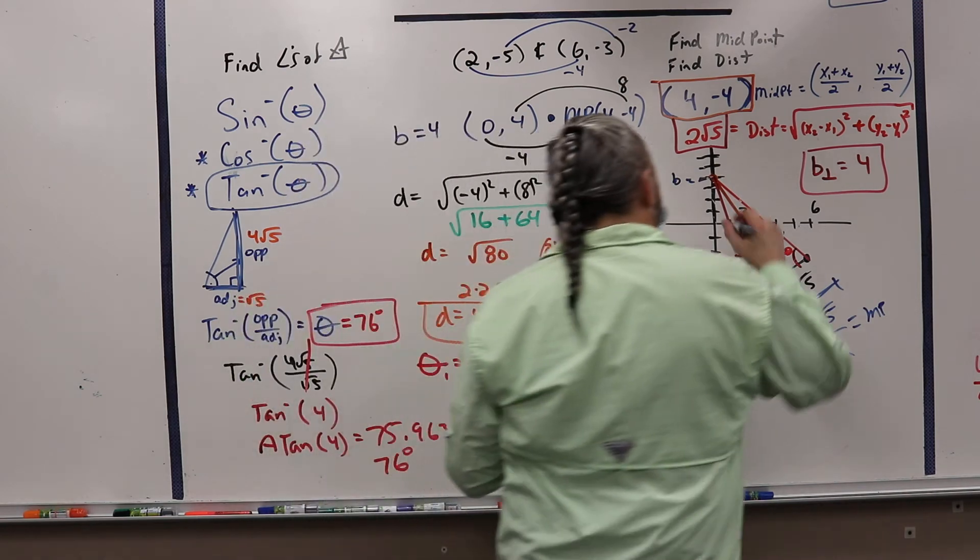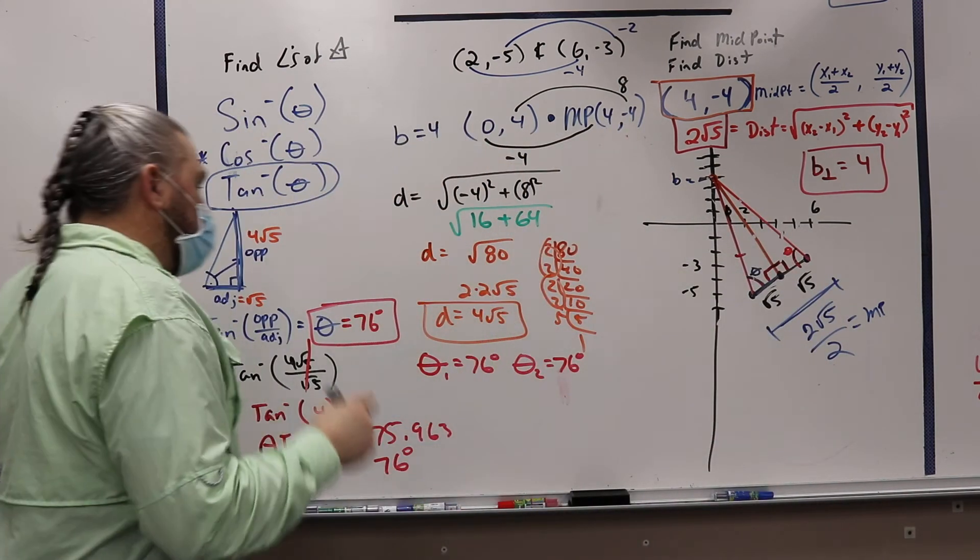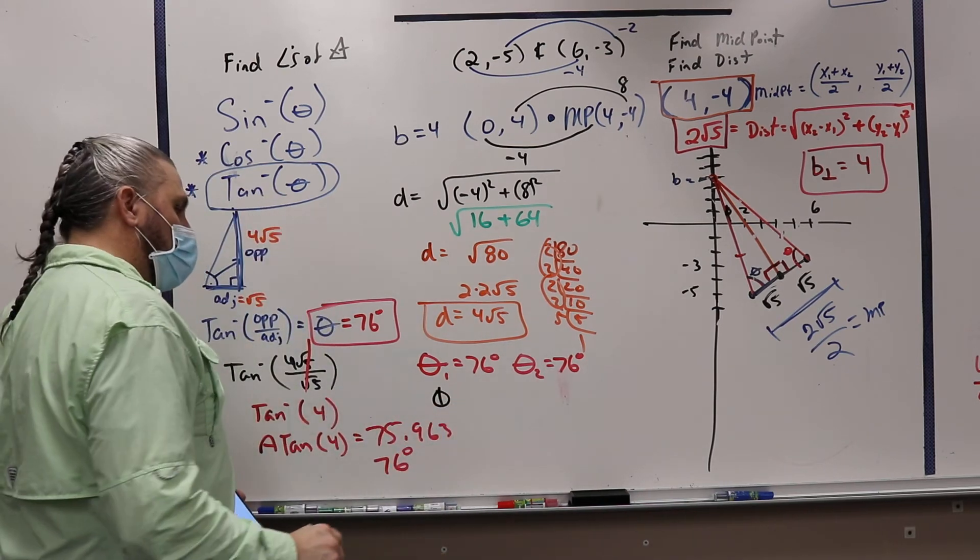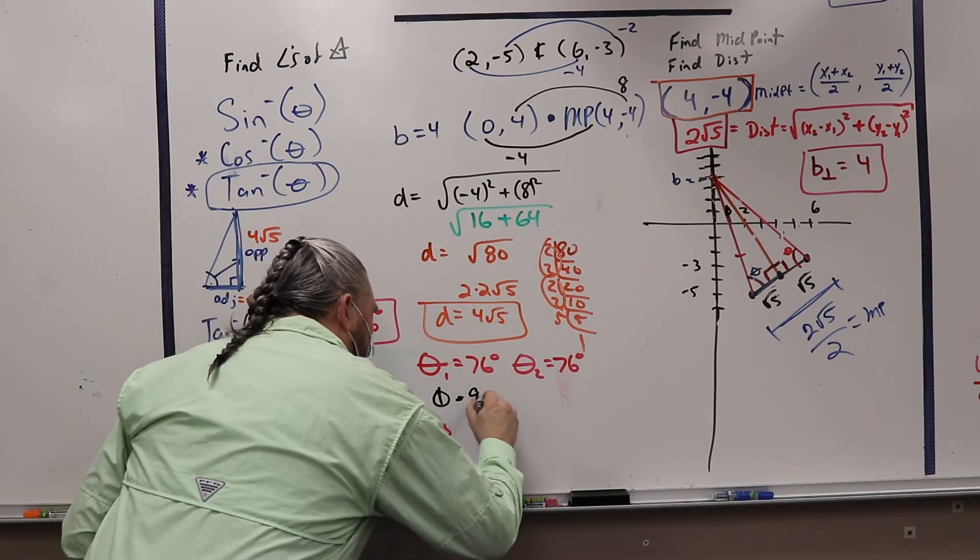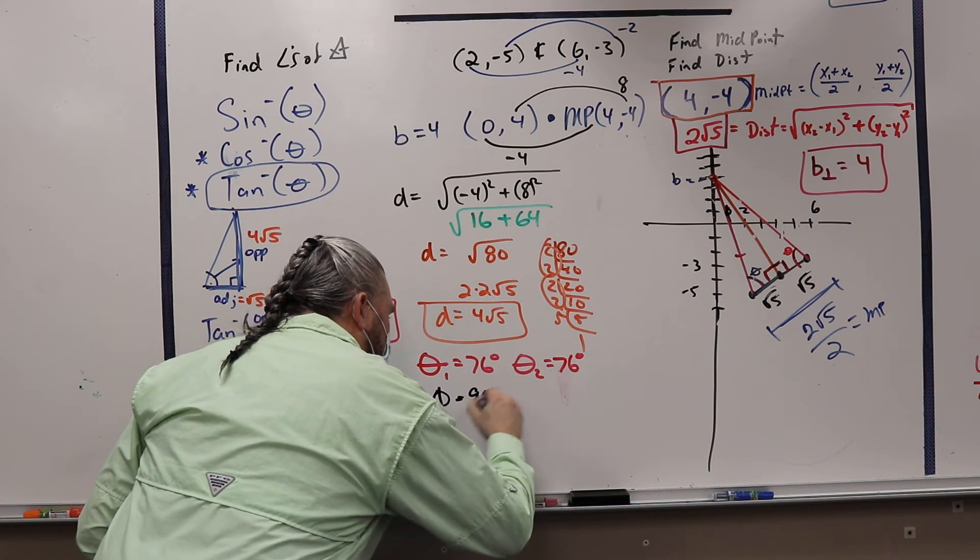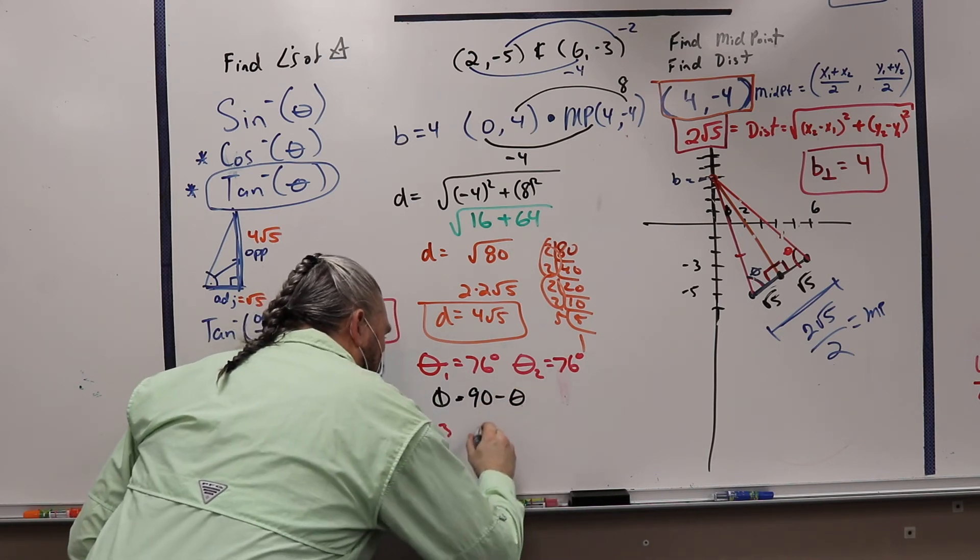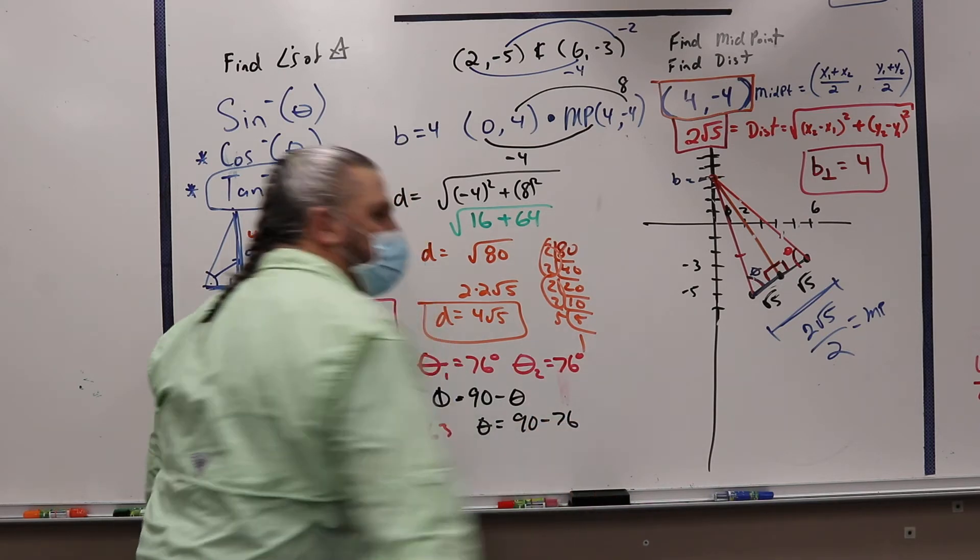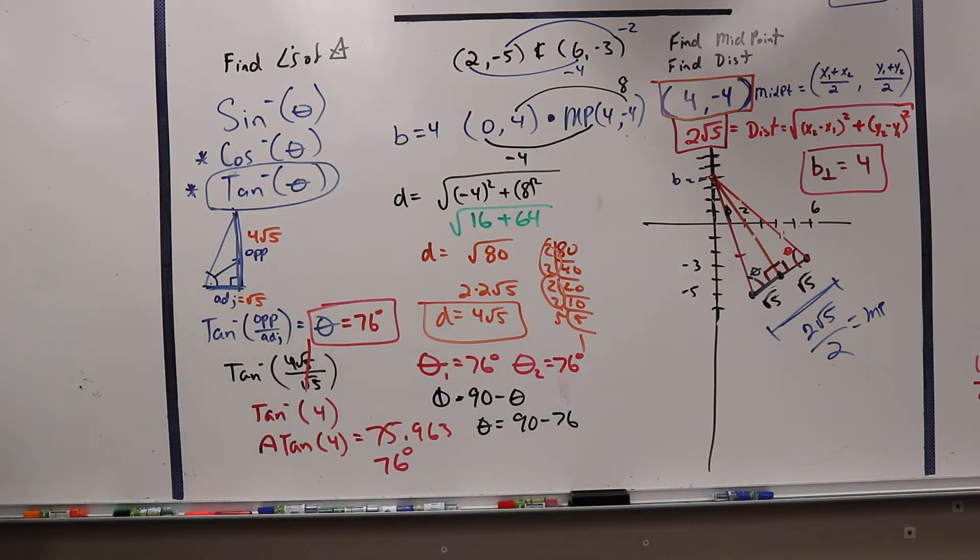Phi. Okay? So the angle phi is equal to 90 minus theta. So angle phi is equal to 90 minus 76. Does that make sense? Yeah. Okay?